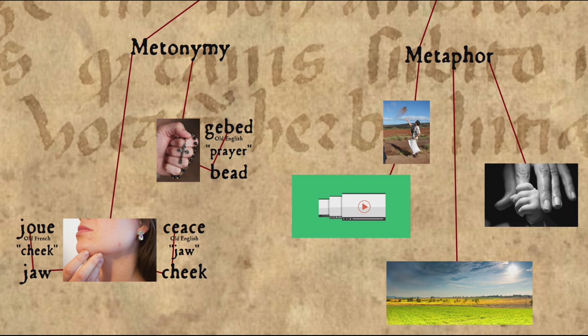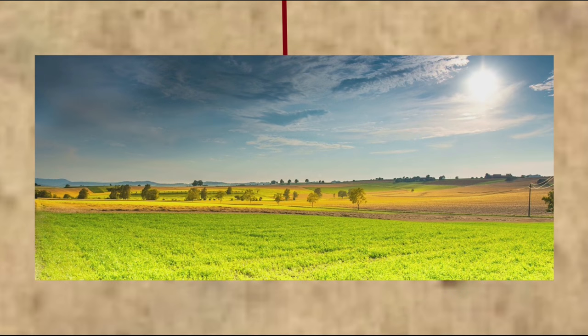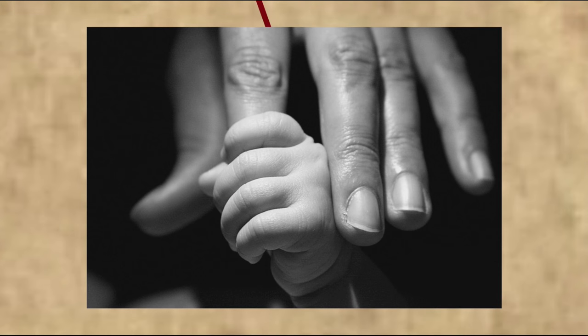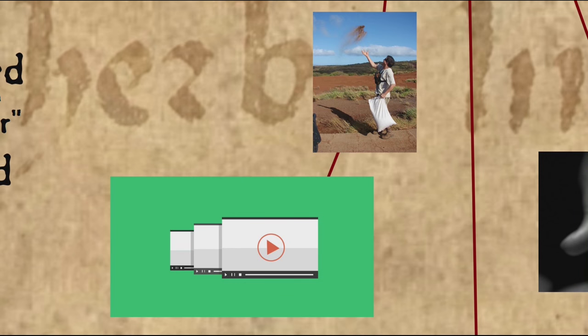Two other semantic shifts worth mentioning are figurative ones: metaphor and metonymy. In metaphor, something — usually concrete — gains a more abstract, figurative meaning. Thus, the older sense of 'field' is an open, grassy area, but the word gained a metaphorical meaning when used in the sense of, say, the field of linguistics. The base sense of 'grasp' is to physically hold something with your hand, but you can now also grasp the concept of semantic shift. And while 'broadcast' originally meant to scatter seeds, now we can say that this lesson on semantic shift is being broadcast on YouTube.